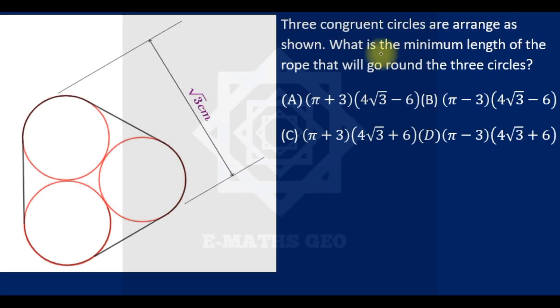Three congruent circles are arranged as shown. What is the minimum length of rope that will go around the three circles? Okay, it's a very nice question. The first thing I have to do is locate the centers of these circles.